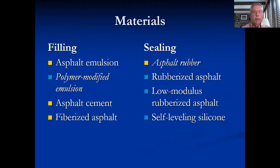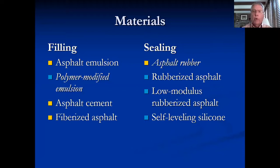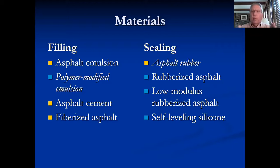As far as the type of materials: for filling, we're basically talking about asphalts and emulsions — asphalt emulsion, polymer modified emulsion, asphalt cement, fiberized asphalt. Whereas for sealing, we're throwing rubber and silicone into the mix: asphalt rubber, rubberized asphalt, low-modulus rubberized asphalt, and self-leveling silicone. An analogy — not a perfect analogy — but I liken sealing to caulking, where you put a flexible material in because it can accommodate some movement, whereas filling might be like a heavy-duty paint, which is a little stiffer.